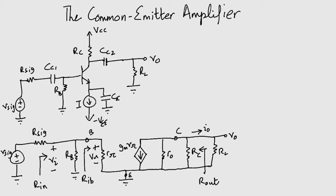Also with arrows, I have denoted three quantities: RIN, RIB, and ROUT. RIN and ROUT are important characteristics of an amplifier, and RIB is going to help us in our calculations. So let's start.